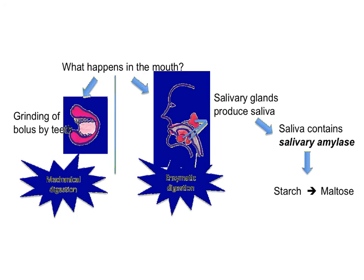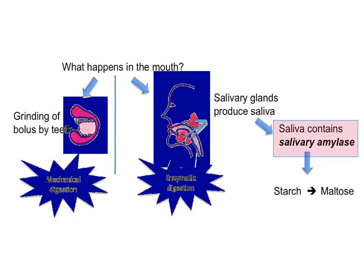Saliva is secreted from the salivary glands into the mouth and combines with starch to both moisten the food for ease of swallowing and to add the digestive enzyme salivary amylase to the bolus of food. Salivary amylase functions best at a pH of 7 and chemically digests starch to maltose.